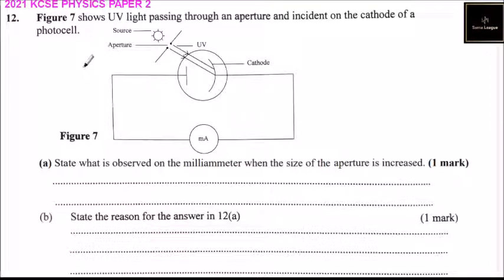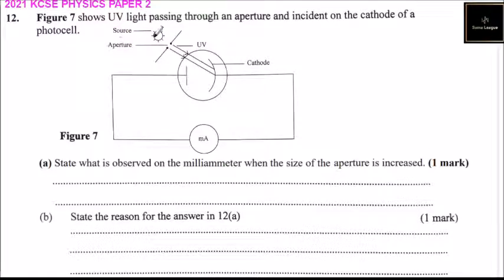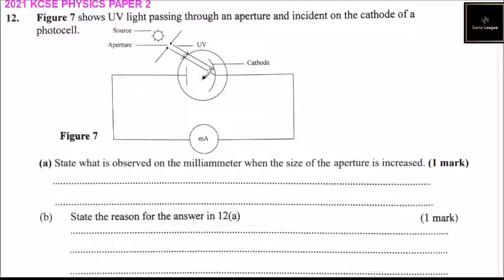Question number 12. Figure 7 shows UV light passing through an aperture and incident on the cathode of a photocell. Here we have the source of light — the UV light, the sun. We have the aperture, which is the opening allowing the light to get onto the cathode of the photocell. This is the cathode here. So we have a circuit here, and here is a millimeter. This is the UV light being illuminated on the cathode of the photocell.